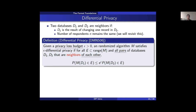A mechanism satisfies differential privacy if for all possible pairs of neighboring databases D1 and D2, and for all possible output sets E, the probability of seeing E when running the mechanism on D1 versus D2 changes by at most a factor of e to the epsilon. In other words, if one person changes their response, all it does is change the output probabilities by a little bit. The epsilon is called the privacy loss budget.